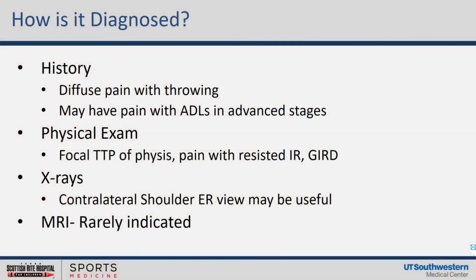How do you diagnose it? Little Leaguer's Shoulder Syndrome is primarily a clinical diagnosis. History is extremely important — they'll have diffuse pain with throwing in the beginning, and then may have pain with ADLs in advanced stages, like putting on their shirt or lifting the arm overhead. It is a clinical diagnosis — you don't necessarily have to have x-rays, particularly in early onset. On physical exam, they'll have focal tenderness at the physis, typically on the anterolateral aspect. The best physical exam finding, in my opinion, is pain with resisted internal rotation.